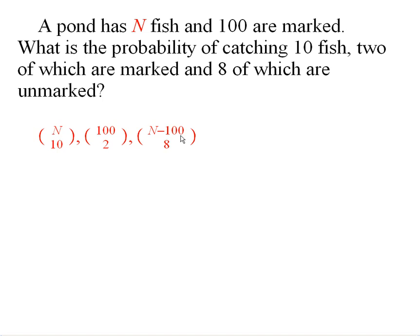This is the number of ways of getting eight unmarked fish. And so with this information, we should be able to figure out the probability of catching two marked and eight unmarked fish.